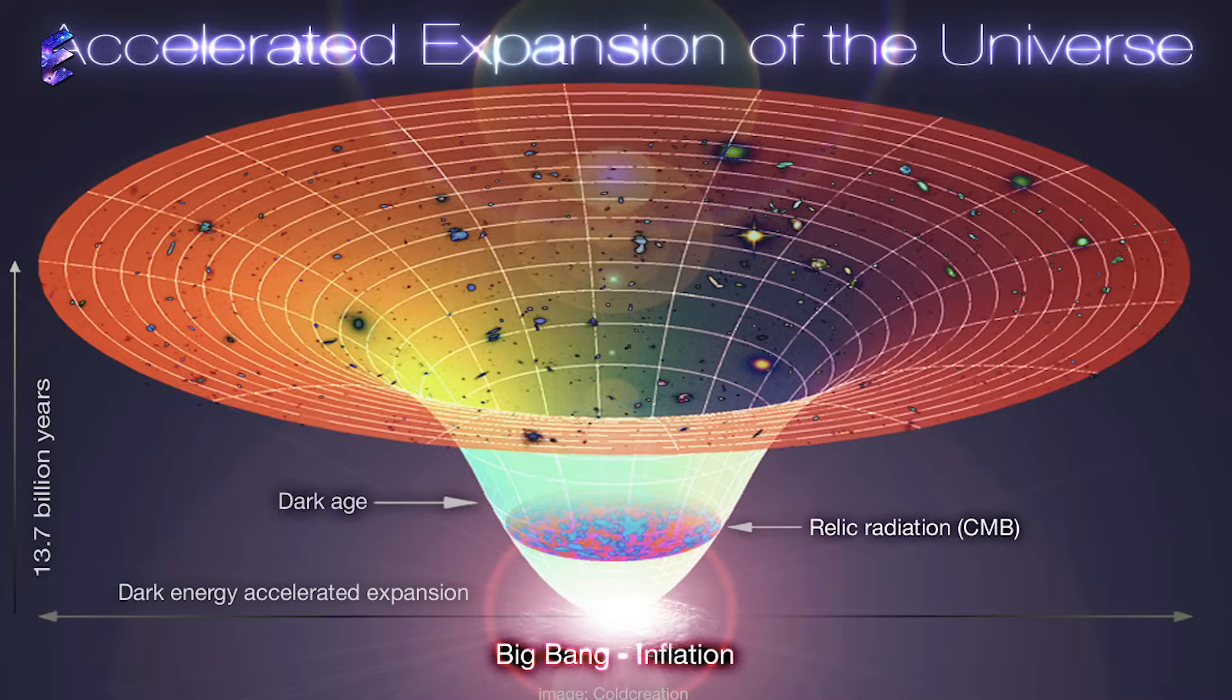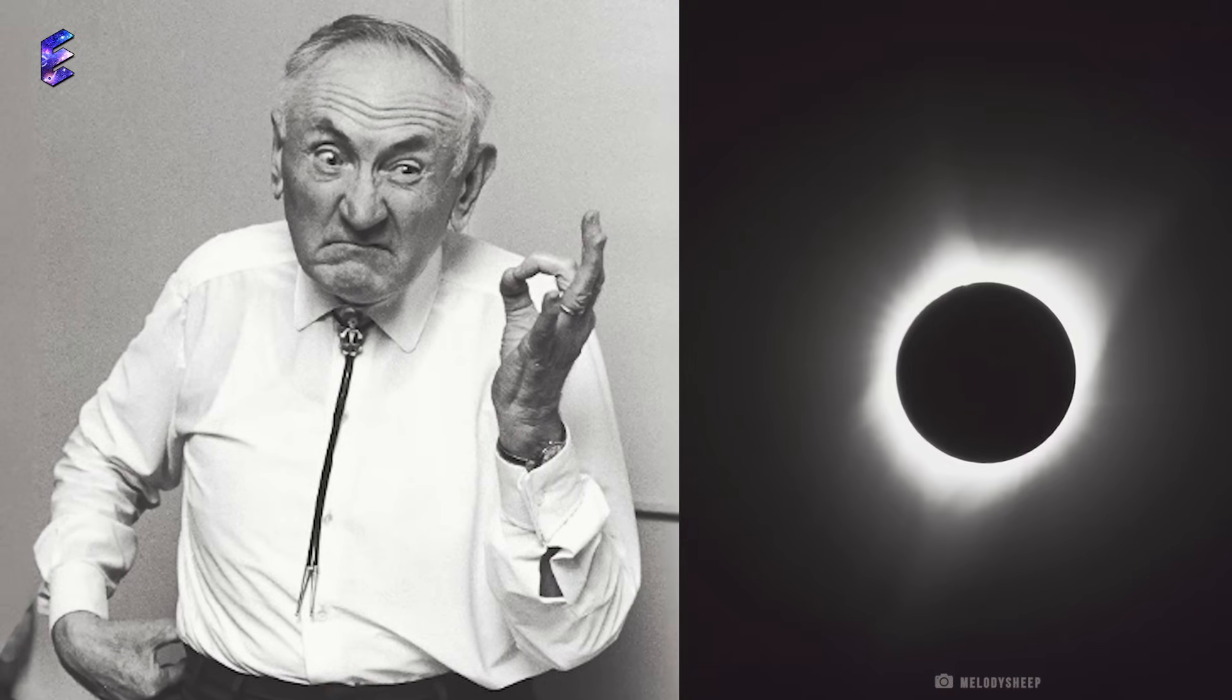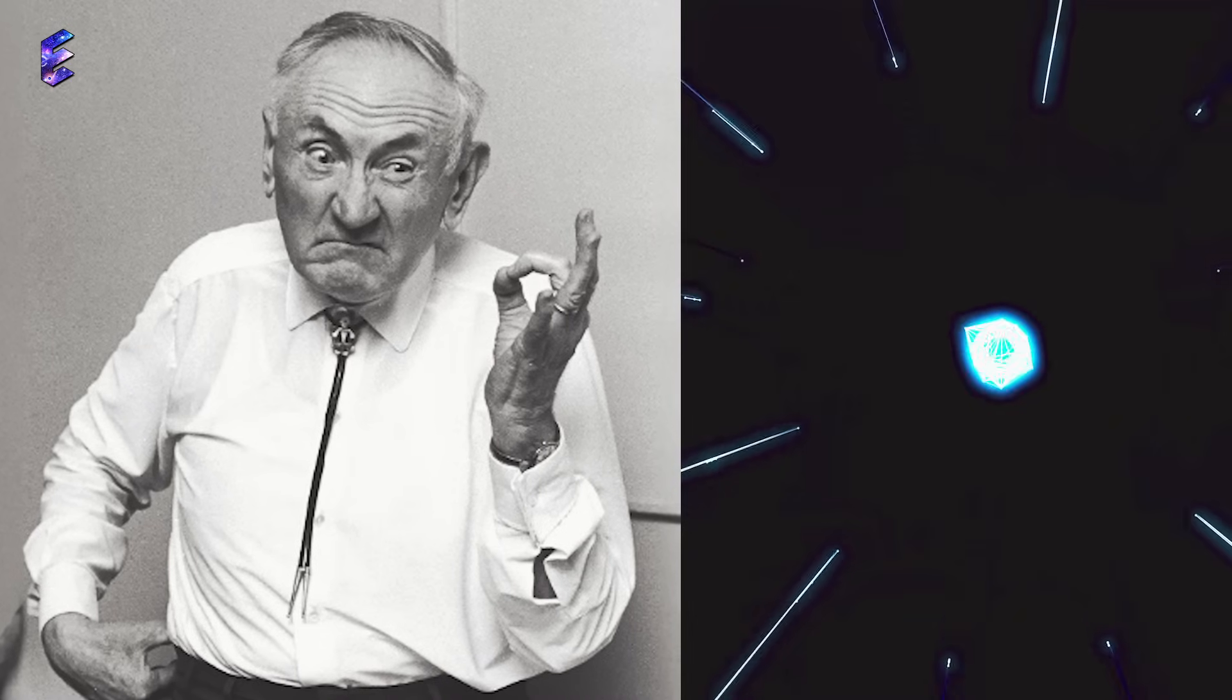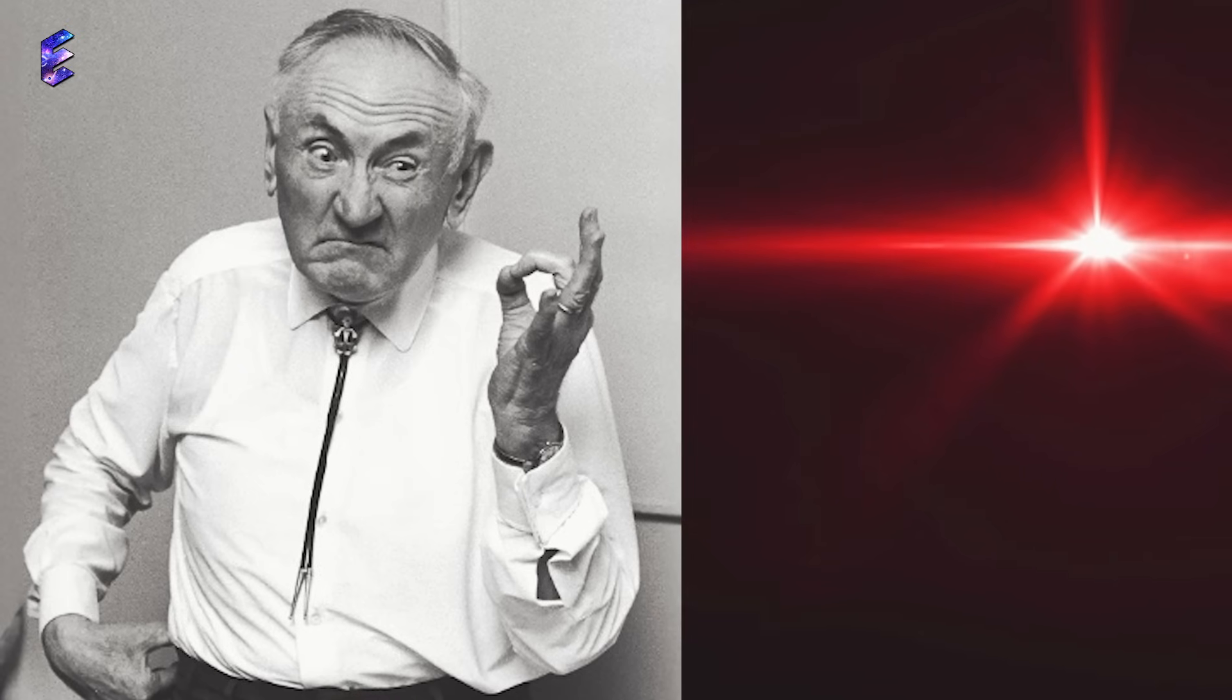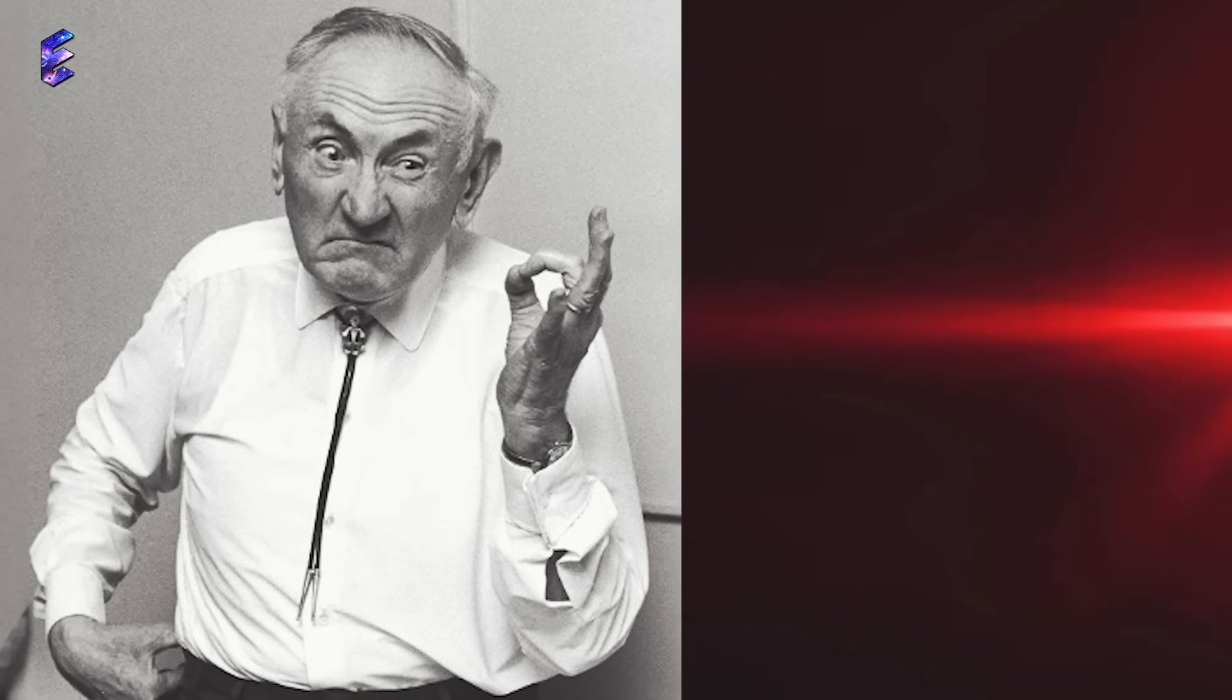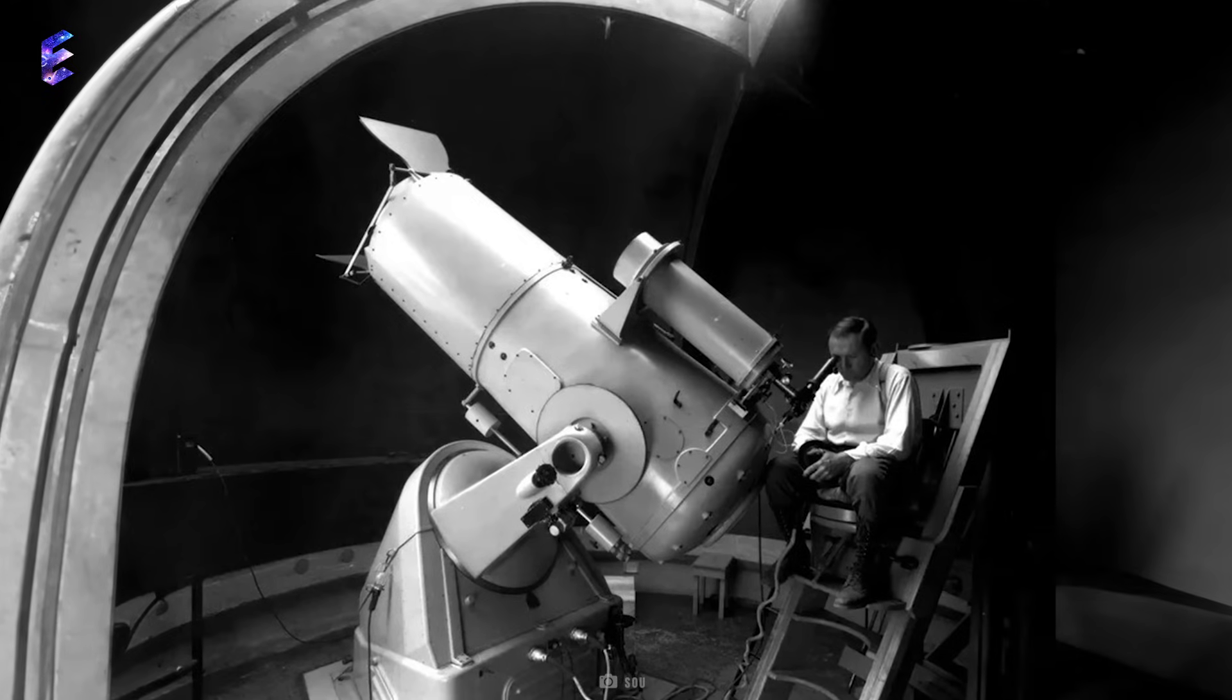But there was another. Fritz Zwicky, a Swiss astronomer who was considered to be one of the brightest minds of his day. He was the one who first brought the existence of neutron stars and dark matter to light. In addition, he was a pioneer in the research of cosmic rays and supernovas. And he was the one who disagreed with Hubble's interpretation of red light and came up with a new theory.